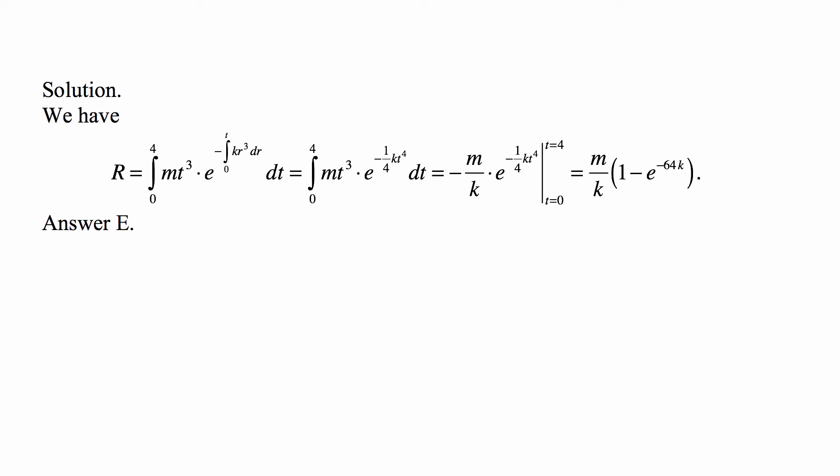And m is there in the function, in the derivative that we see under the integral. The point is that what is written here, minus m over k times e to the minus one-fourth kt⁴, is exactly the function whose derivative you can see under the integral. It's mt³ times e to the minus one-fourth kt⁴, that is exactly the derivative of the function minus m over k times e to the minus one-fourth kt⁴.